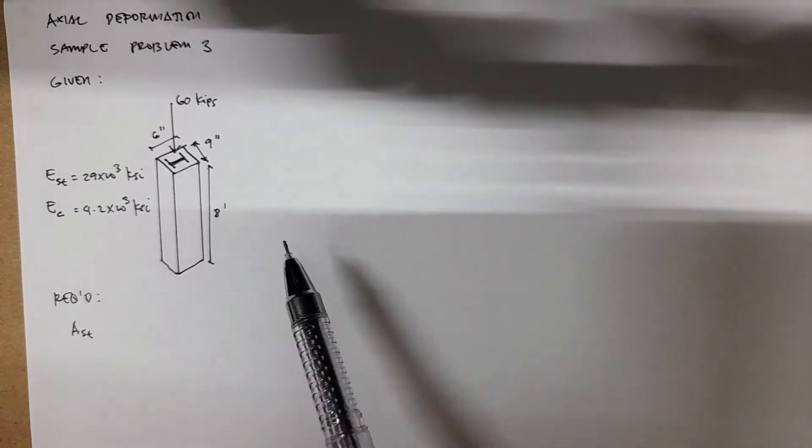Here's another example of axial deformation, but this problem involves composite material - material made of two materials with very different properties. For this case, we have steel encased within concrete.